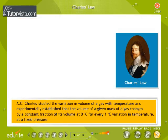Charles Law: A.C. Charles studied the variation in volume of a gas with temperature and experimentally established that the volume of a given mass of a gas changes by a constant fraction of its volume at 0 degrees Celsius for every 1 degree Celsius variation in temperature at a fixed pressure.